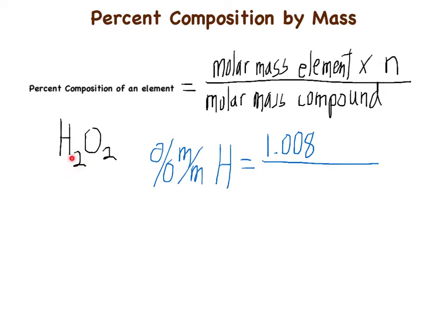For the number of moles, just look at the subscript in the molecular formula — H₂O₂ is a mole ratio, and there are two hydrogens, so we multiply by 2. The numerator is done. Now for the molar mass of the compound, we sum all the atomic masses.